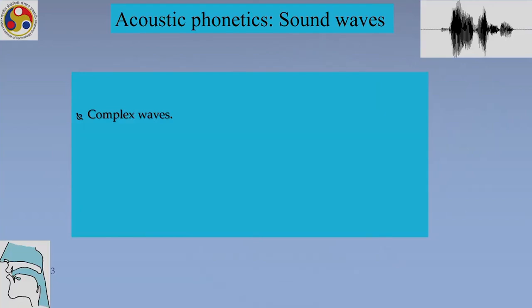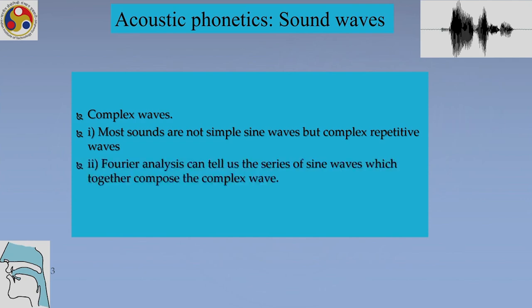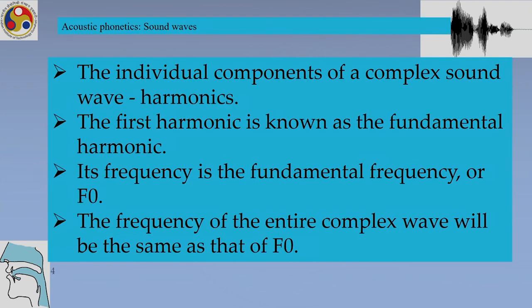Let us recap what we studied so far: that sound waves are complex waves, and that most sounds are not simple sine waves but complex repetitive waves. Fourier analysis can tell us the series of sine waves which together compose a complex wave. The individual components of a complex sound are called harmonics.